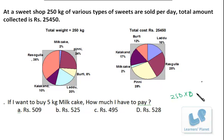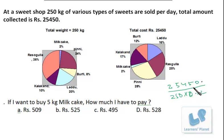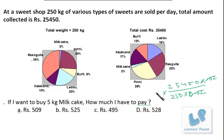Now, what is the contribution of milk cake in the total cost? That is still 2%. So it's 25,450 multiplied by 0.02. You can see that things cancel out, so there's no need to multiply. Now we have to find the price of 5 kilograms, so this gives us the price of 1 kilogram.